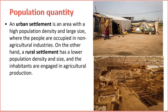Urban Settlements. 1. Size and Density. Urban settlements are characterized by larger and more concentrated populations. The term 'urban' often conjures images of bustling cities with towering skyscrapers and crowded streets. The sheer size and density of urban populations create a dynamic and diverse social environment. 2. Migration and Mobility. Urban areas attract a constant influx of people seeking employment, educational opportunities, and a cosmopolitan lifestyle. Migration patterns contribute to the continuous growth and mobility within urban settlements, resulting in a melting pot of cultures and backgrounds.